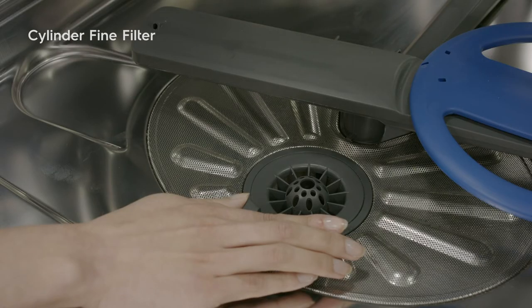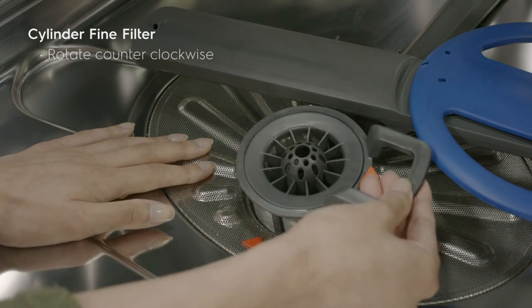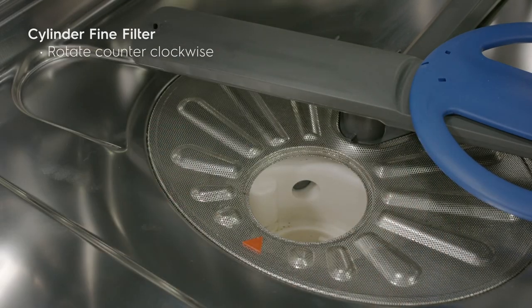To remove the cylinder fine filter, rotate it counterclockwise. Lift the filter out and empty any debris.